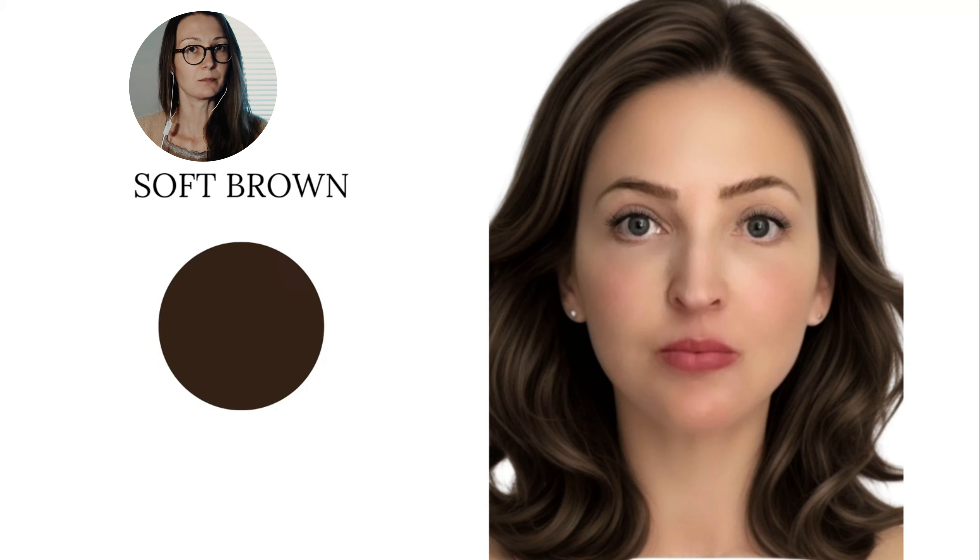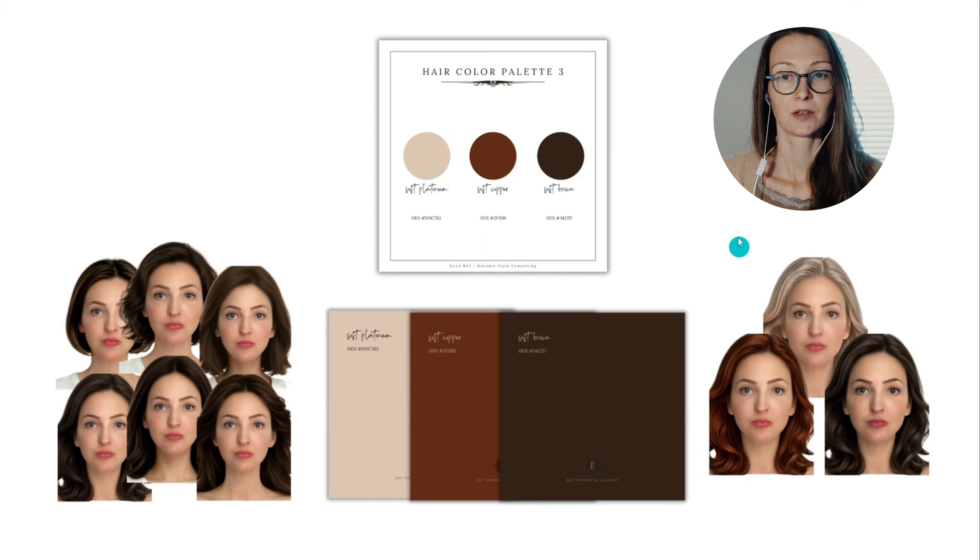The third color is a soft brown, again in the medium chroma spectrum. This is the most important point: anything darker than this brown will be too overpowering for her, so this should be the darkest type of brown she chooses.